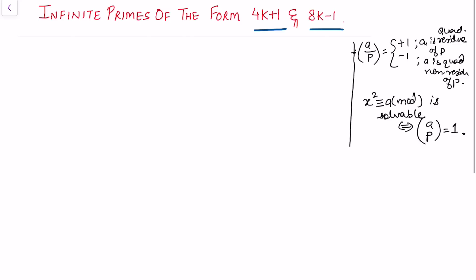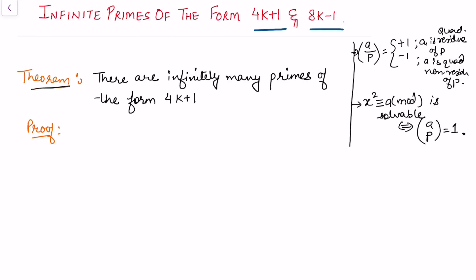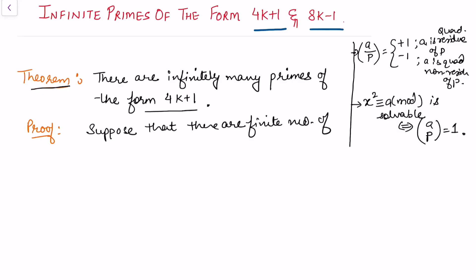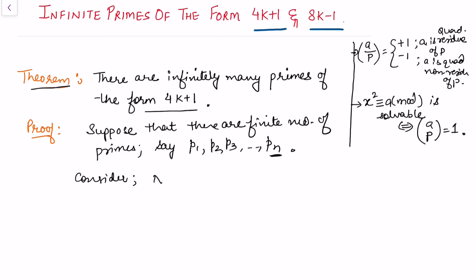I will use these results while proving that there exist infinitely many primes of the form 4k+1. The theorem states: there are infinitely many primes of the form 4k+1. I start the proof by contradiction — suppose there are only finitely many such primes. Call them p₁, p₂, ..., pₙ. Now consider the integer N = (2·p₁·p₂·...·pₙ)² + 1.